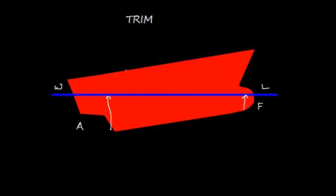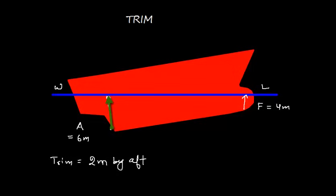This is the forward draft F and this is aft draft A. The difference between forward and aft draft is trim. For example, the forward draft is 4 meters and aft draft is 6 meters. In this case the trim is going to be 6 minus 4, that is 2 meters by aft — because the aft draft is more than the forward draft. Or simply, 2 meters by stern.